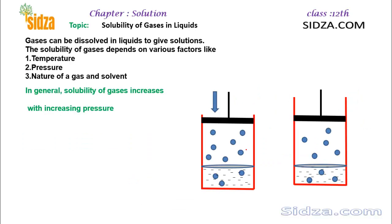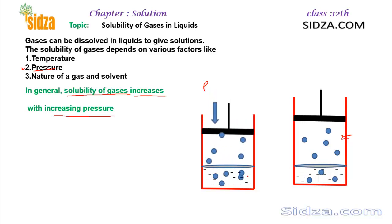The second factor on which the solubility of a gas depends is pressure. The solubility of the gas increases with the increase in pressure. That means if you increase the pressure, solubility will increase. At lower pressure, less amount of gas is dissolved. But if you increase the pressure and apply some force so that the pressure inside increases, more gas will enter into the liquid state. That means the solubility of a gas is directly proportional to the pressure of the gas above the surface of the liquid.